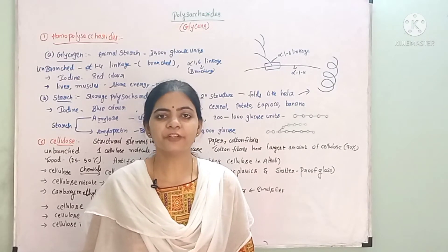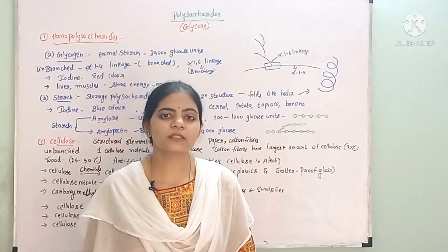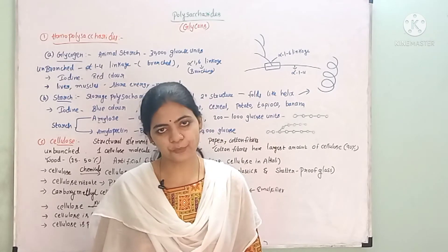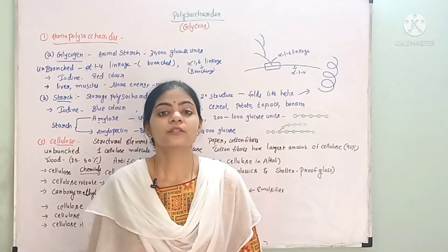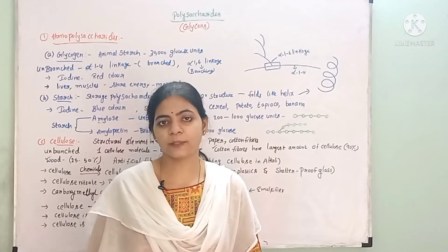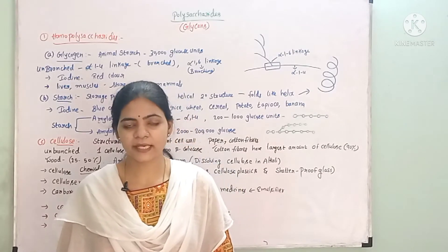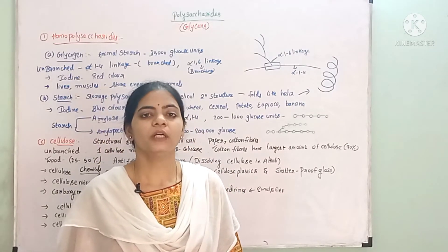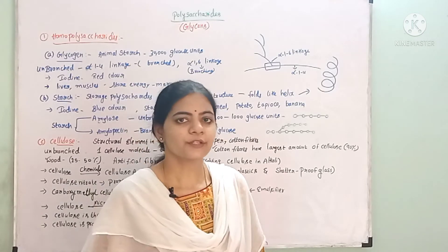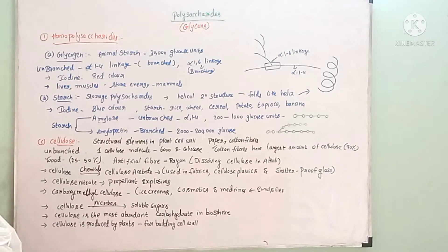Hello everyone, this is Lata. In the last video, we covered types of polysaccharides: homopolysaccharides — only one type of monomer — and heteropolysaccharides — more than one type of monosaccharide forming a chain.